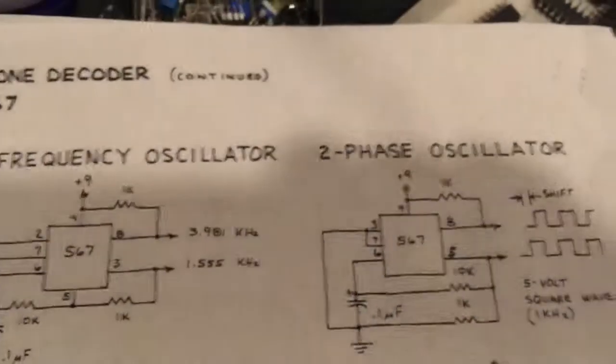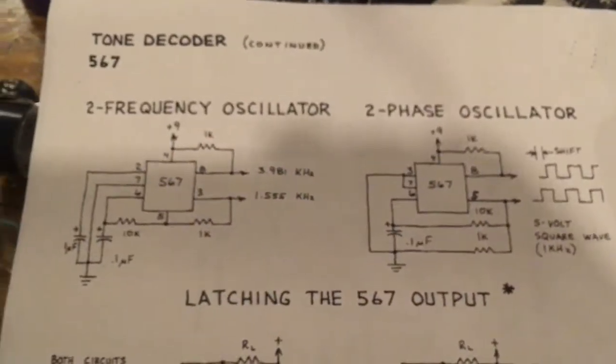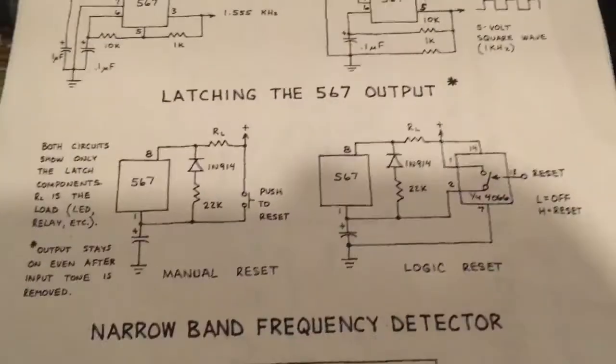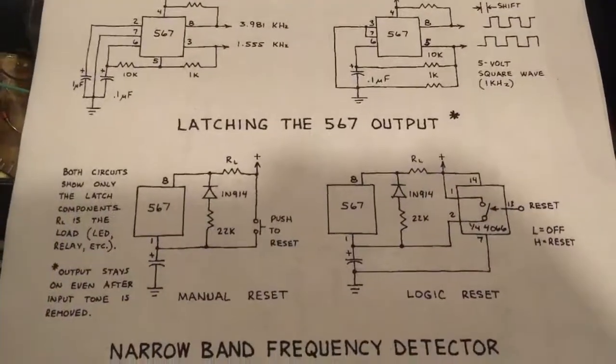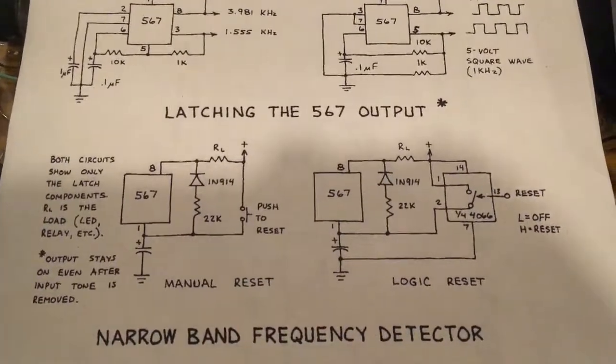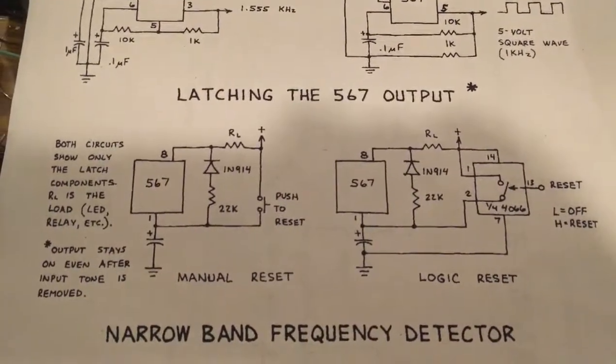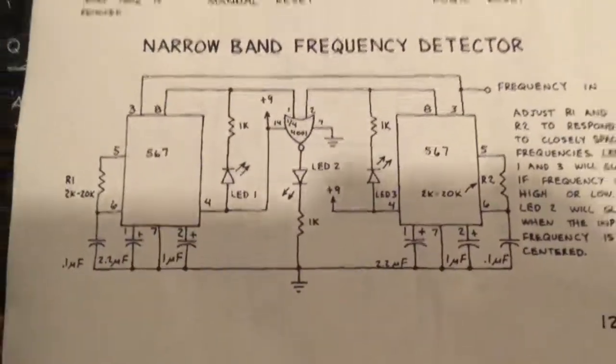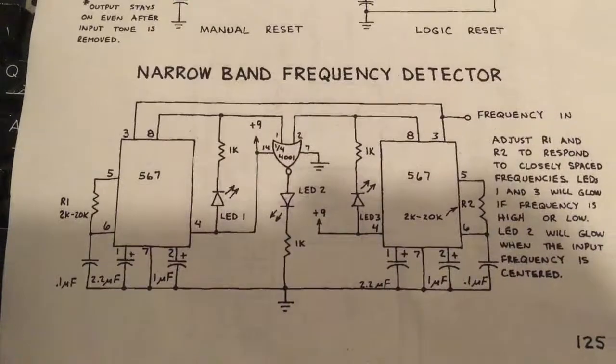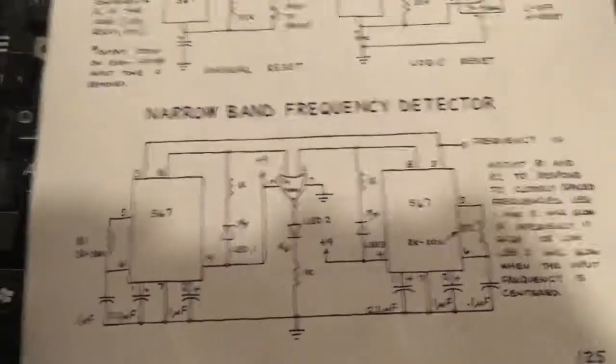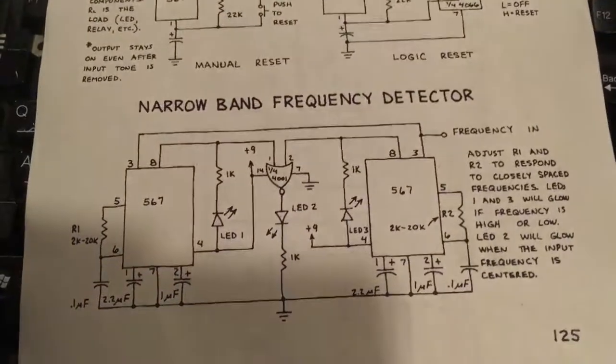Here are 3 more schematics. If you want to take a look, the latching 567 and also this is narrow band frequency detection. This is also a very useful schematic and project.